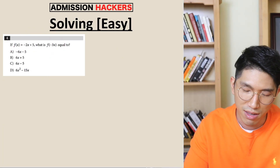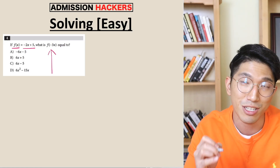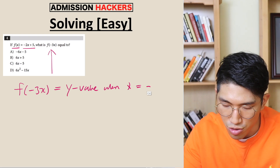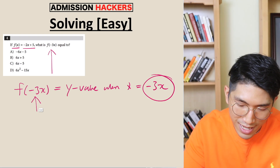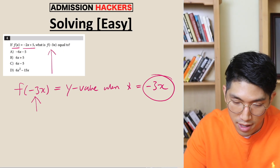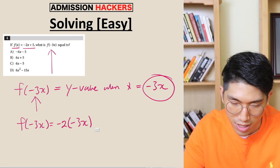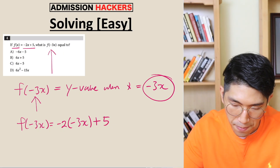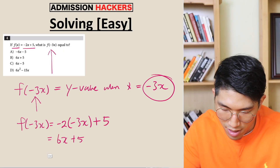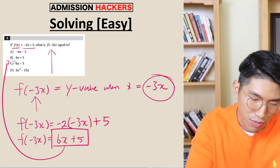Here's the easy version. The question says f(x) = −2x + 5 and it's asking us to find f(−3x). f(−3x) is just asking us to find the y value when x is equal to −3x — when −3x is plugged into the function, what's the result? So f(−3x) = −2(−3x) + 5. If you distribute it, you get 6x + 5, because minus times minus cancels out and becomes a plus. So f(−3x) = 6x + 5, and that's going to be our answer — choice B.